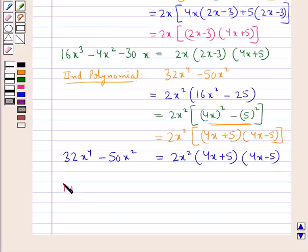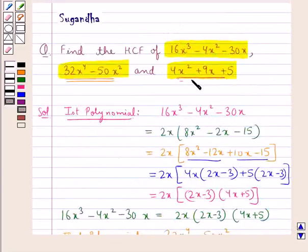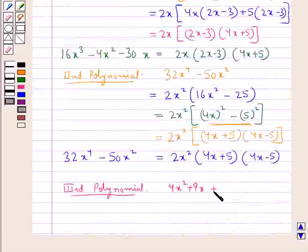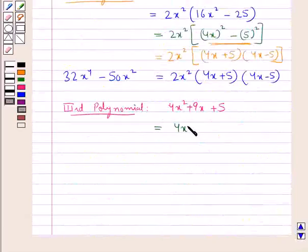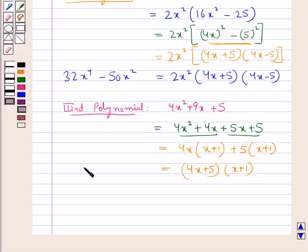Now consider the third polynomial, which is 4x² + 9x + 5. We will find the factors of this polynomial. This is equal to 4x² + 4x + 5x + 5, which gives 4x(x + 1) + 5(x + 1), equal to (4x + 5)(x + 1). So these are the factors of the polynomial 4x² + 9x + 5.